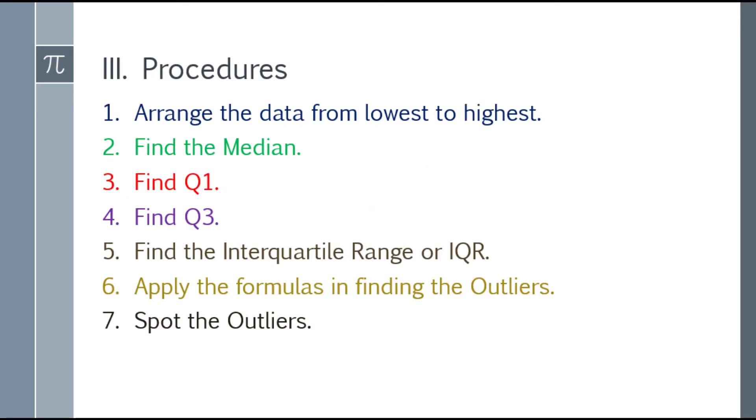Procedure style. Ito yung procedures para mahanap natin yung outliers. The first one is arrange the data from lowest to highest. Arrange mo muna. Pangalawa, pinapin natin yung median. Third, find Q1, first quartile.